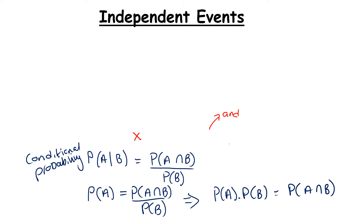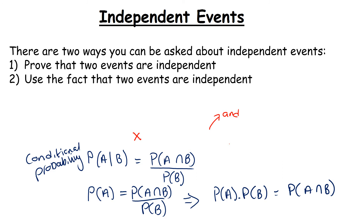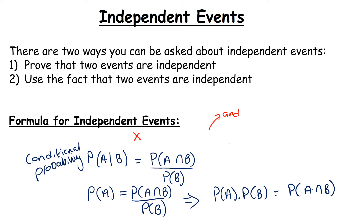It's important that you understand independence. There are really two ways that you could be asked to deal with this: the first is to prove that two events are independent, and the second is to use the fact that two events are independent. There's a formula for independence and you do need to know this — it's not in the log tables, so please highlight it and make sure it's written down. It's top of your list of formulas to learn for probability and statistics.